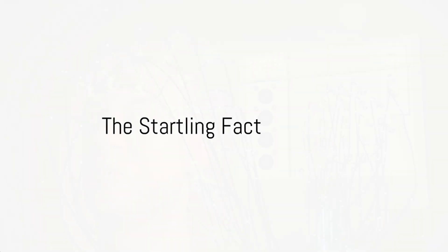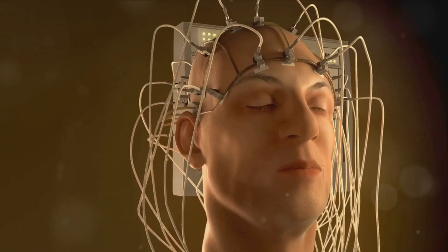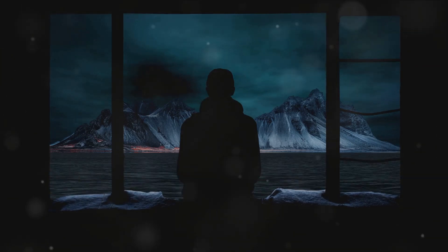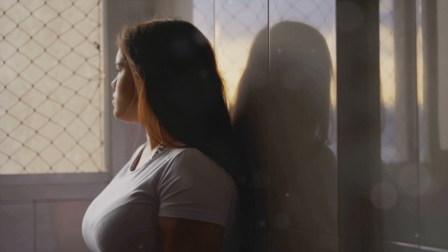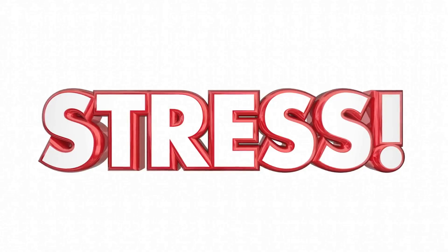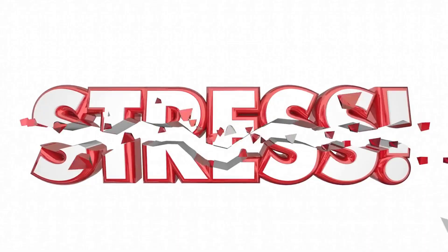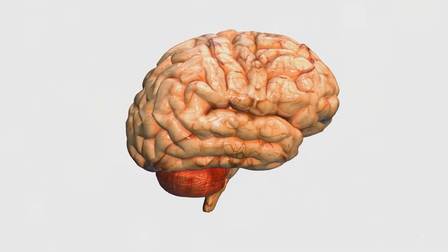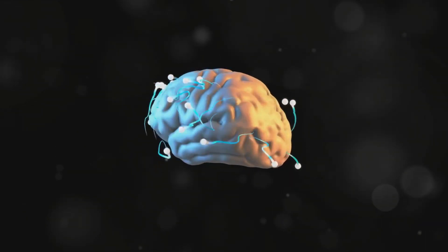Did you know that social isolation can alter your brain's structure and function? It's a startling truth that solitude can significantly shape our minds, from neuroplasticity to our stress responses. So let's dive into the 10 ways social isolation can affect our brains.